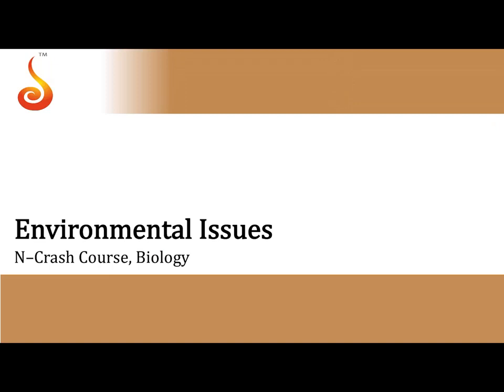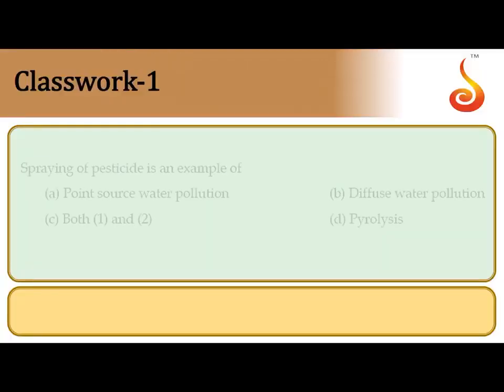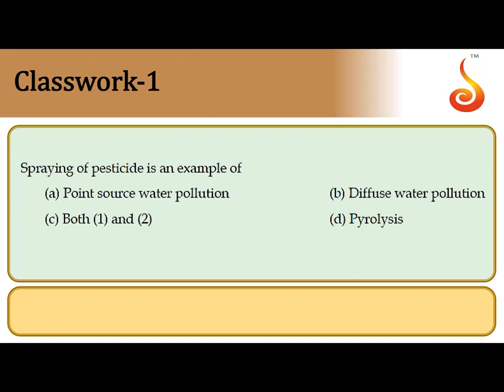Moving on to practice questions from Environmental Issues: the first question asks what type of pollution is caused by spraying pesticides. The pollution brought about by spraying a pesticide or insecticide over an agricultural field is referred to as diffuse water pollution, because it happens over a wide surface area. The correct answer is option B.